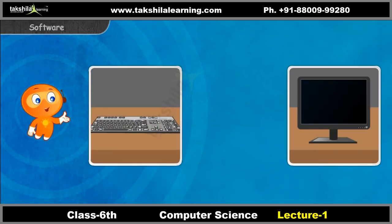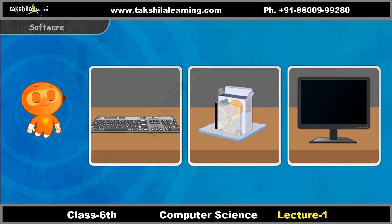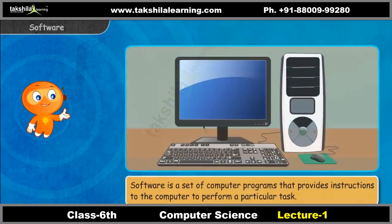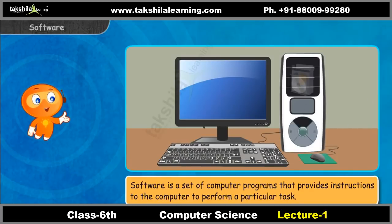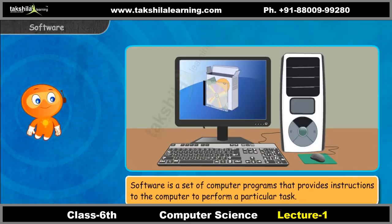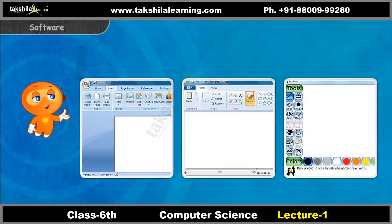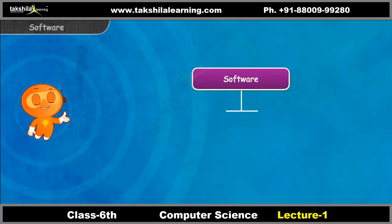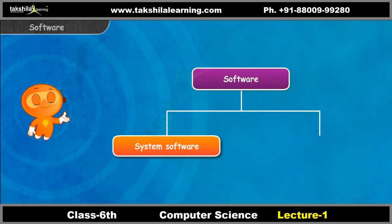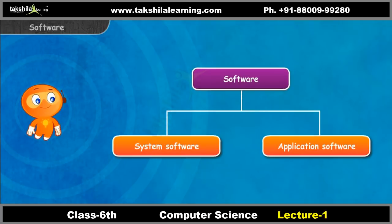Along with hardware, a computer also requires software to perform tasks. Software is a set of computer programs that provides instructions to the computer to perform a particular task. Microsoft Word, Paint, and Tuxpaint are some examples of software. We can classify software into system software and application software. Let's learn more about these.